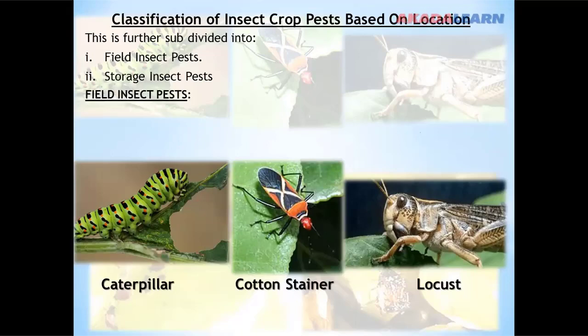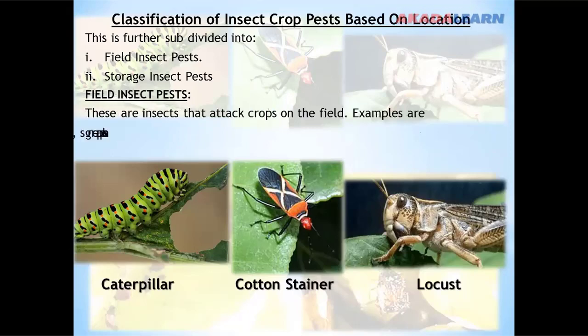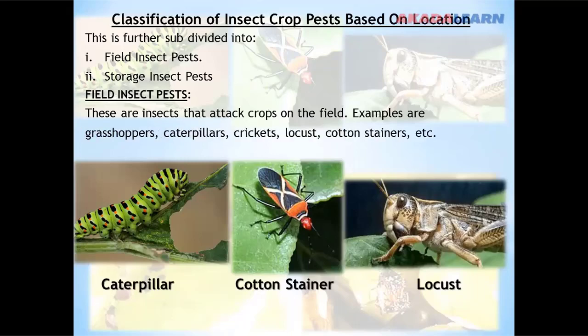Field insect pests are insects that attack crops on the field. Examples are grasshoppers, caterpillars, crickets, locusts, cotton stainers, and many more.